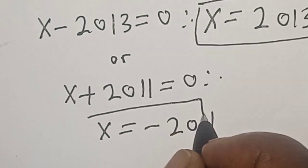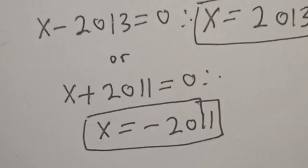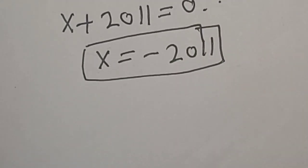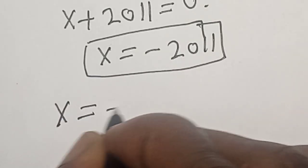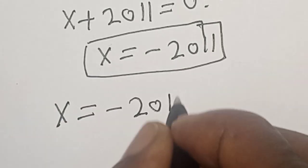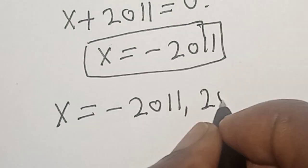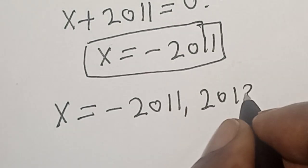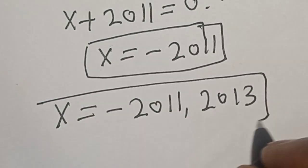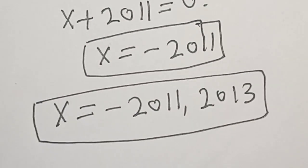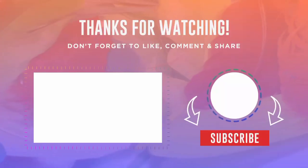Our final answers are x equals negative 2011 and x equals 2013. If you enjoyed the class, please don't forget to like, share, comment, and subscribe. Thank you.